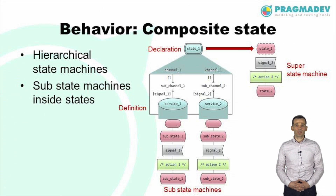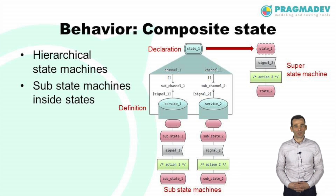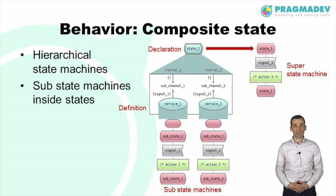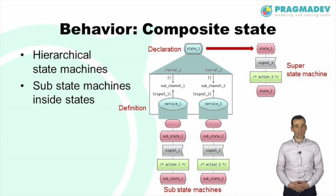A composite state is a state composed of substate machines and it allows modeling of hierarchical state machines. Each substate machine handles a different subset of messages, while the super state machine also handles its own inputs. When a message is for one of the substate machines, the super state does not change. But when a message is for the super state machine, all substate machines are terminated. In this example, the process will stay in state 1 until it receives signal 3, while signal 1 and signal 2 are treated by its substate machines.